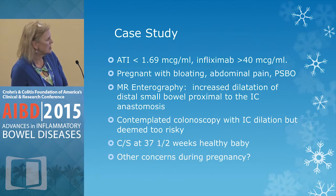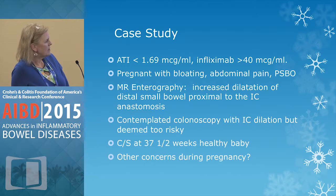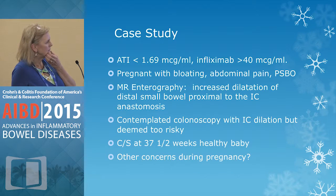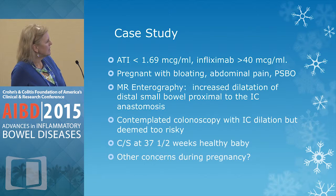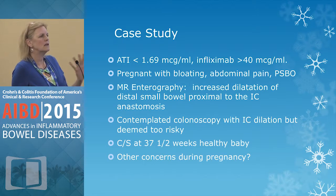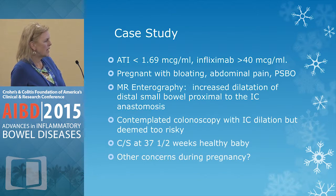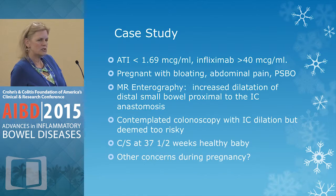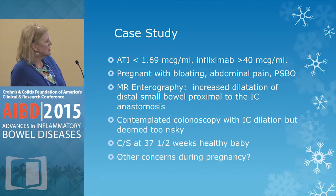We went ahead and checked: she actually had plenty of infliximab in her system and her antibodies were negative. She then got pregnant and was having a lot of bloating, abdominal pain, and obstructive symptoms during pregnancy. We did an MR enterography, which is relatively safe in pregnancy, and found significant dilatation of her distal small bowel proximal to the ileocolonic anastomosis. We had a lengthy conversation with the surgeon and high-risk OB about whether to safely perform a colonoscopy to dilate the anastomosis, but chose not to, and managed her pain conservatively.